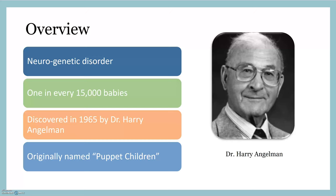Starting off with an overview of Angelman syndrome, it is a neurogenetic disorder that is found in one in every 15,000 babies. It was first discovered in 1965 by Dr. Harry Angelman. Due to the jerky movements and happy demeanor associated with the disorder, he called patients exhibiting these symptoms as puppet children. This name was later changed to Angelman syndrome.